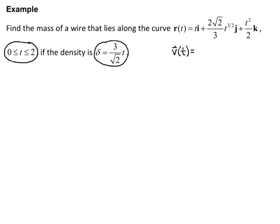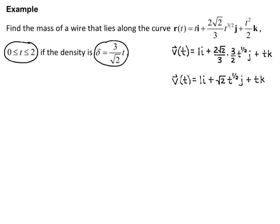We're given the parametrization of the curve and need to find the magnitude of velocity. Taking the derivative of R: the i component derivative is 1, giving 1·i. The j component: (2√2/3) times (3/2)t^(1/2) gives √2·t^(1/2)·j. The k component has a derivative of t, giving t·k. So velocity is 1·i + √2·t^(1/2)·j + t·k, after simplifying the j term.